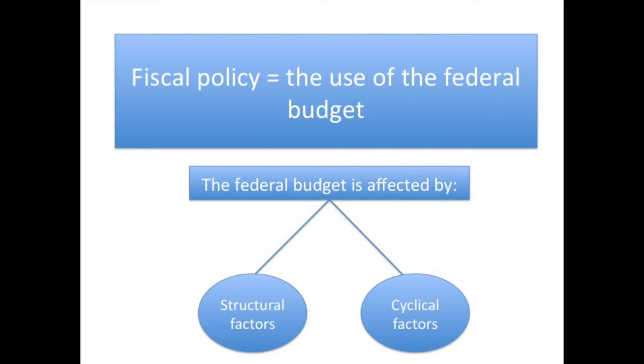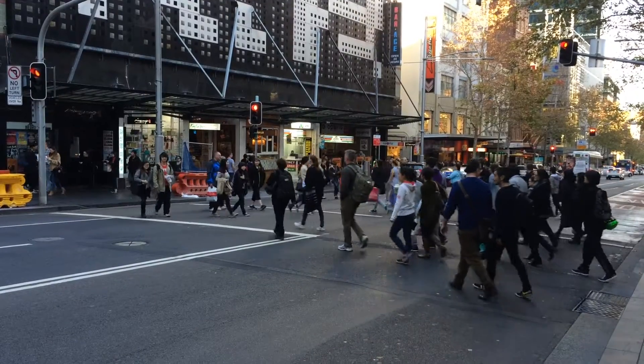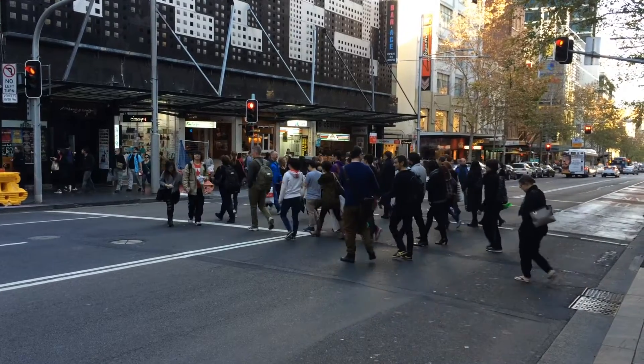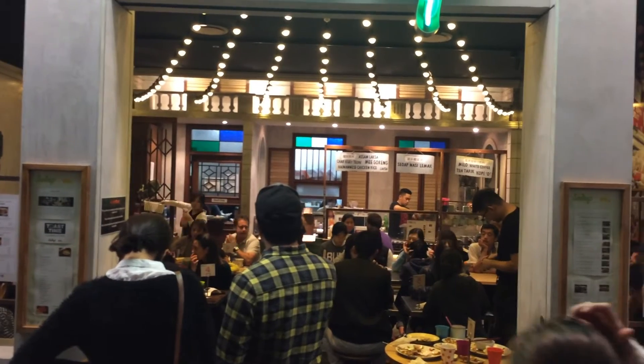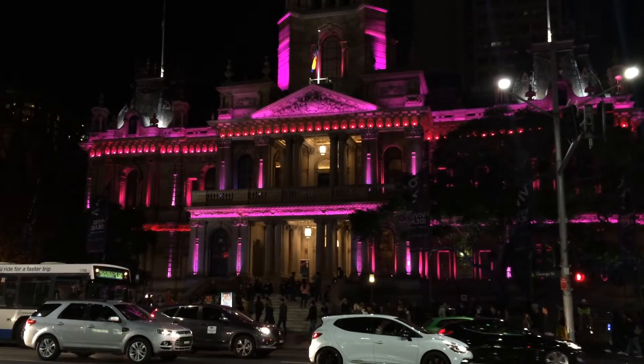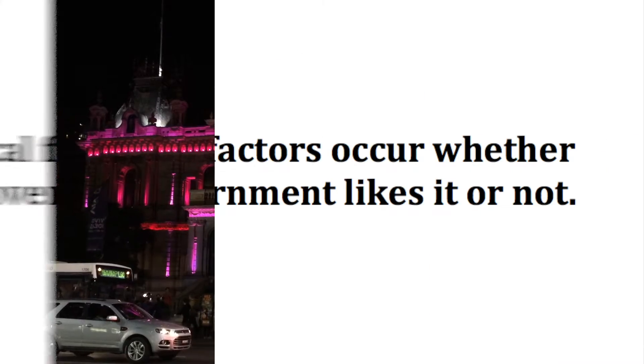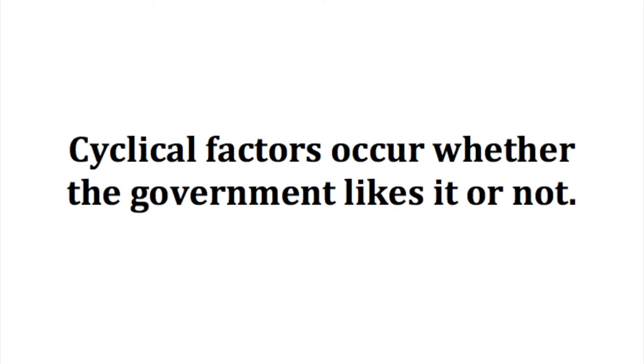The federal budget is also affected by cyclical and structural factors. Structural factors are those items that the government chooses to spend money on — for instance, the government says we'll spend X billion dollars on health or defence. These are deliberate decisions; that's the structural side. Cyclical factors are the parts of the budget affected by the level of economic activity. They are not the result of government decisions — cyclical factors occur whether the government likes it or not.